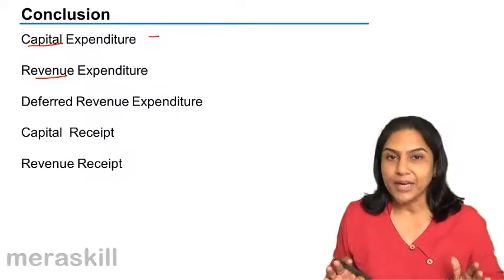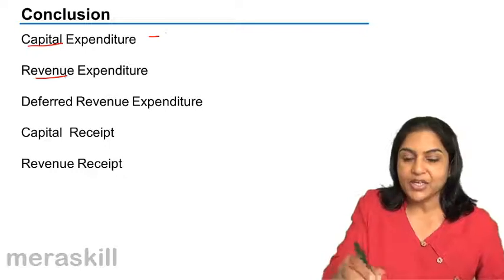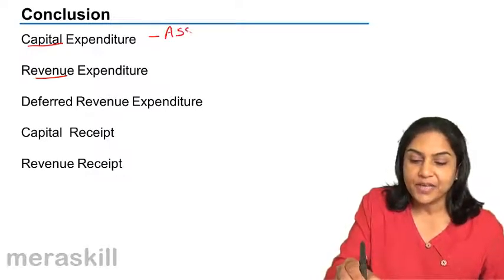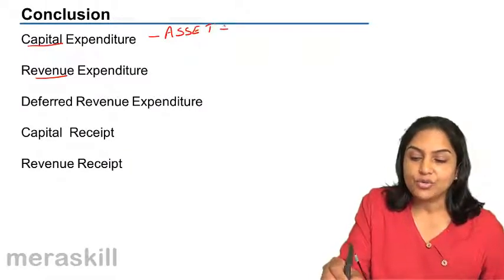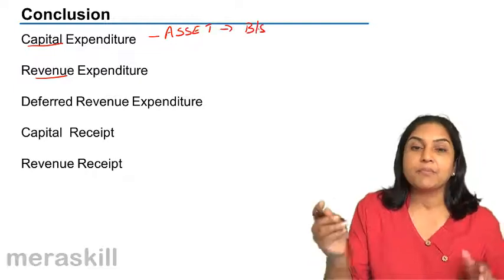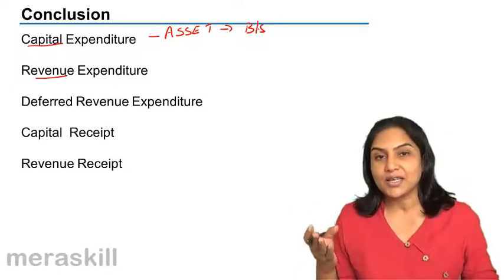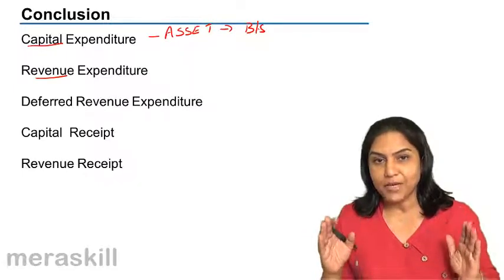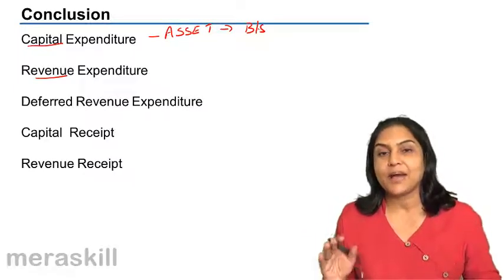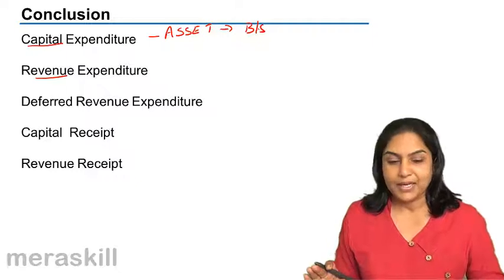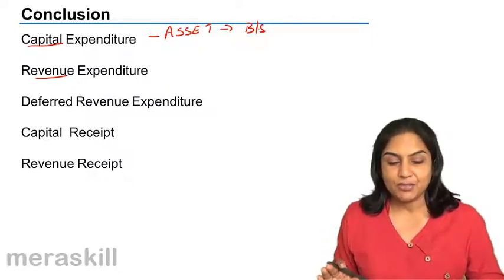What are the implications? When we take it as a capital expenditure, it is an asset. If it is an asset, it goes to our balance sheet. It improves the financial position, improves the asset. The amount of assets in the balance sheet will go up, increase. That is capital expenditure.